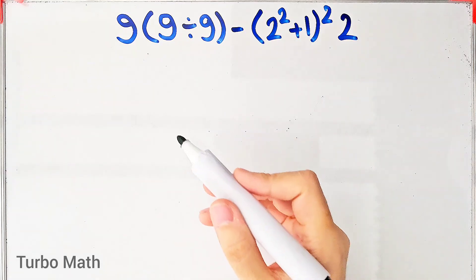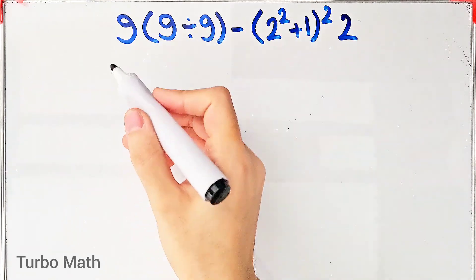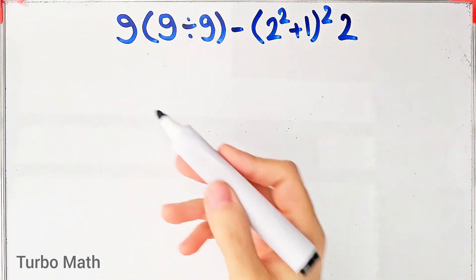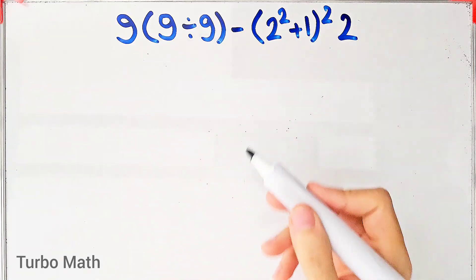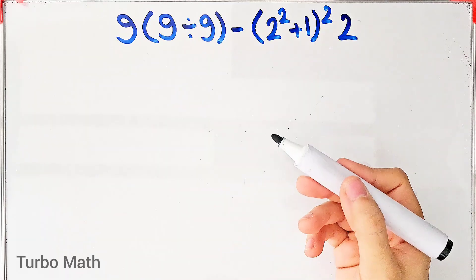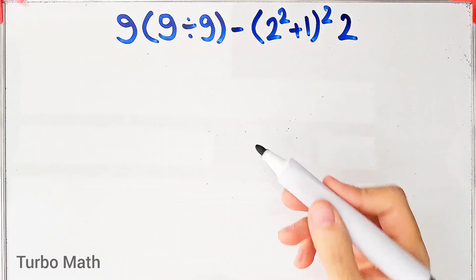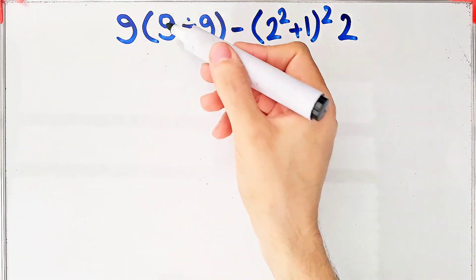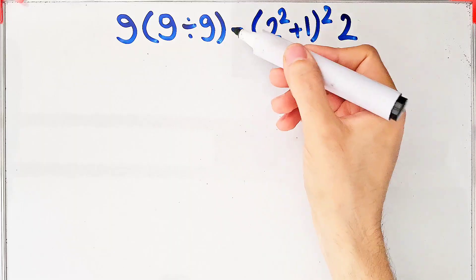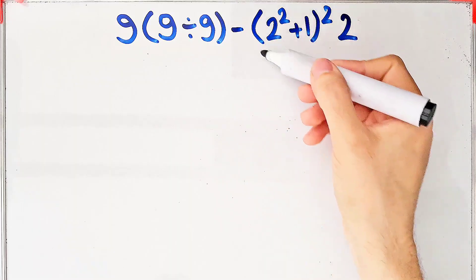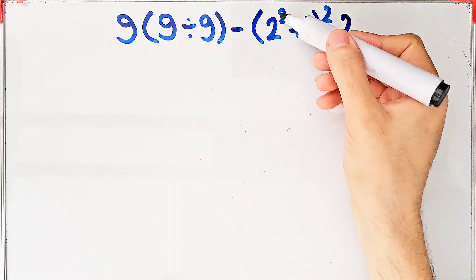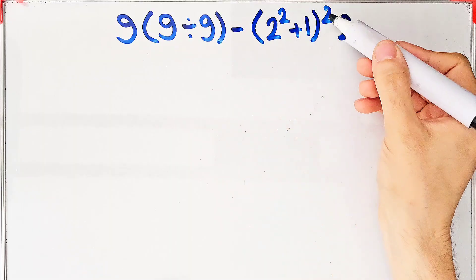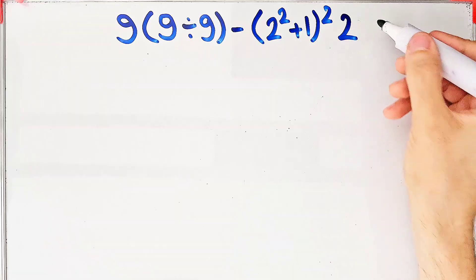Hi friends, welcome to Turbo Mass channel. A lot of people when they see this question don't know which operation to do first, so they might get it wrong. We have nine times nine divided by nine, then minus two to the power of two plus one, then all of them to the power of two, then times two. What is the answer to this question? Can you solve it?